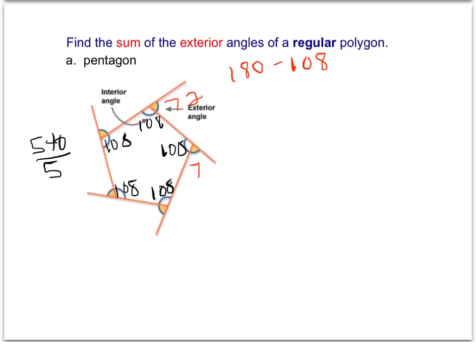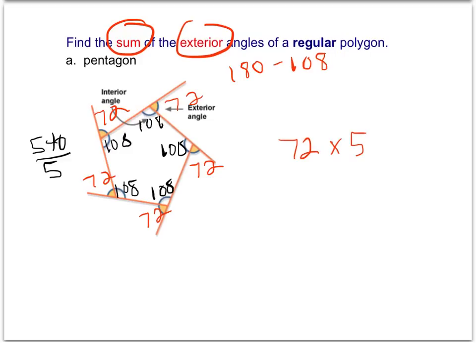So if we know that each exterior angle of this pentagon is 72 degrees, to find the sum of the exterior angles we're just going to do 72 times the five exterior angles. And if you put that in your calculator, we're going to get 360 degrees as the sum of the exterior angles.